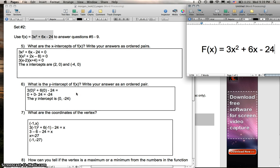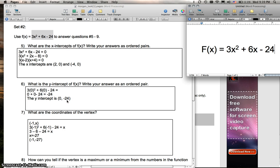Then, the next one is: what is the y-intercept of the same equation? So you plug in 0 for x, and this is even easier. You plug in 0 for x and just solve the equation, so you get 0 plus 0 minus 24 equals negative 24. So the y-intercept is (0, -24).